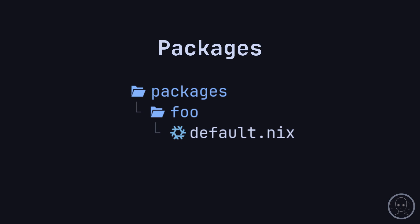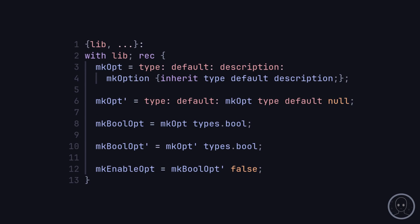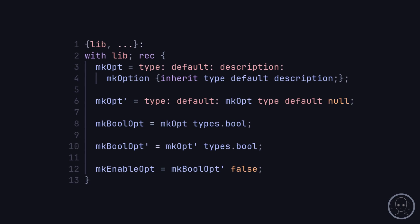Snowfall will automatically include custom packages under a namespace you create. They work exactly the same way as a package in nixpkgs does. My template includes some utility functions for working with Nix, like mkopt and mkboolopt.